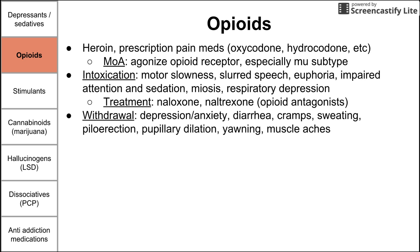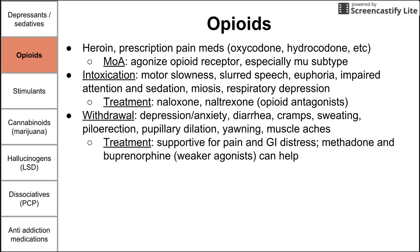Withdrawal symptoms are kind of the opposite of intoxication: depression and anxiety, diarrhea, cramps, sweating, piloerection, pupillary dilation, yawning, and muscle aches. Piloerection, pupillary dilation, and yawning are pretty specific to opioid withdrawal and help differentiate it from other drug withdrawals. Treatment is mainly supportive — something for pain, something for GI distress. Methadone and buprenorphine, which are weak opioid agonists, can also help.